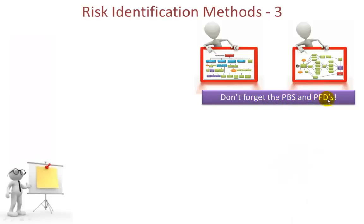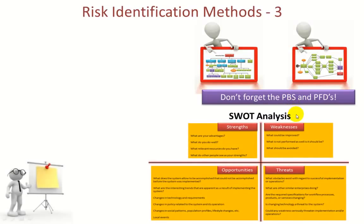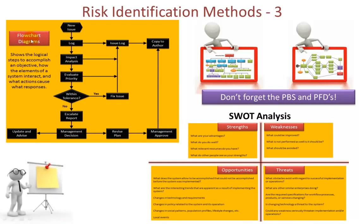Don't forget the product breakdown structure and product flow diagrams from PRINCE2 product-based planning. Identifying which products are needed and the sequence in which they're created can allow you to uncover potential risks. Using SWOT analysis — strengths, weaknesses, opportunities and threats — any one of the strengths could help maximise an opportunity or reduce the impact of a threat, and weaknesses the reverse; brainstorming these helps manage risks. Flow chart diagrams showing sequences — for example if you were writing a piece of software, the steps and sequences may throw up areas where risk needs to be managed within the development.